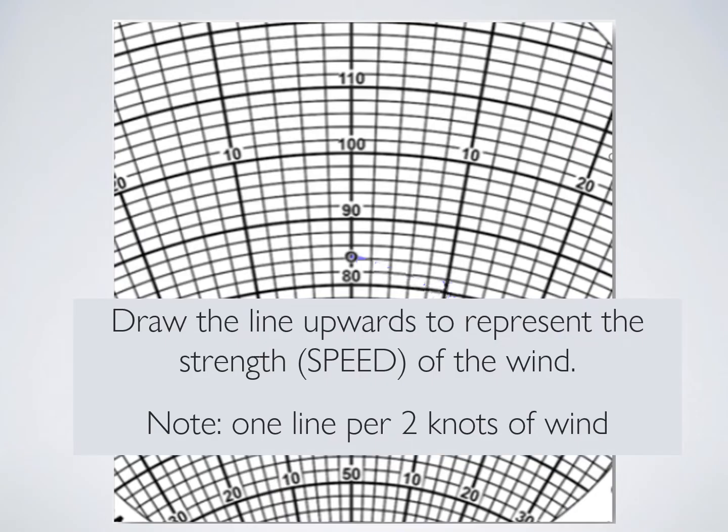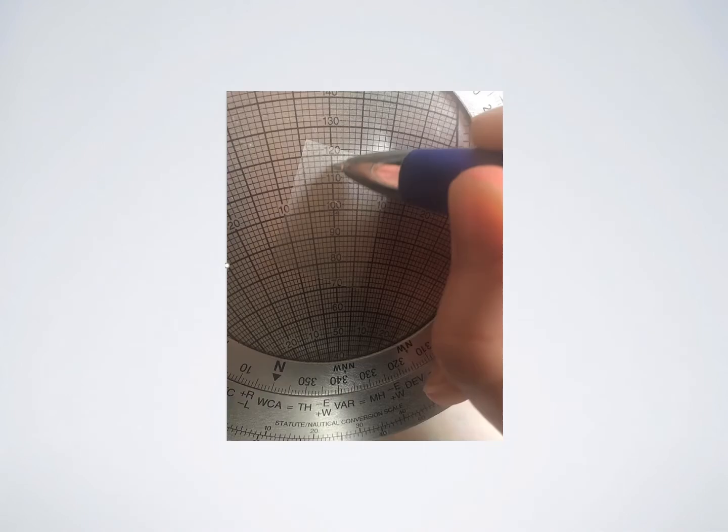Draw a line upwards representing the speed of the wind, remembering that one line horizontally equals 2 knots of wind. I like to use a piece of clear tape and then I can just mark it up and remove it after.